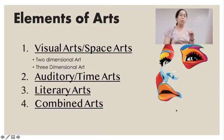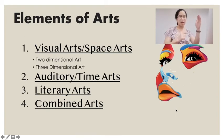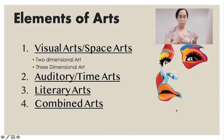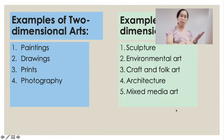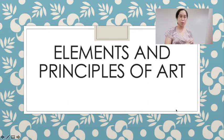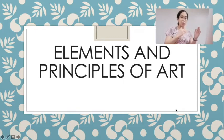Another general element we have is the combined arts. This is the combination of different forms, like visual art and literary art, or visual art and auditory. We will get to discuss each of these later on. But the discussion today is focused on visual art, especially on the elements and principles. Let's go into the elements and principles of art in general.